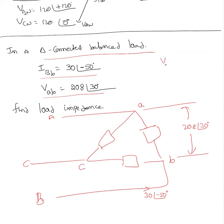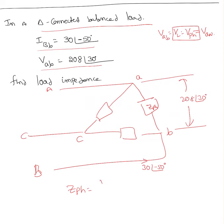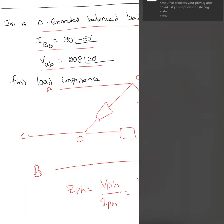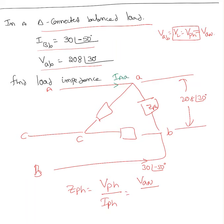It's a delta-connected load. Immediately we need to know: VAB, which is the line value, equals the phase value. So in delta, line value equals phase value. That VAB must equal VAN. To find the phase impedance I have to use the phase values. ZPH equals VPH over IPH. The voltage across that branch is VAB. I need to find the current there — that current is IAB, since IAA comes in and IAB is the branch current. So I need to find IAB.